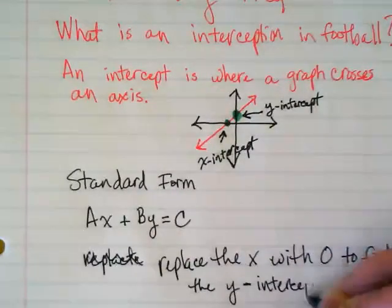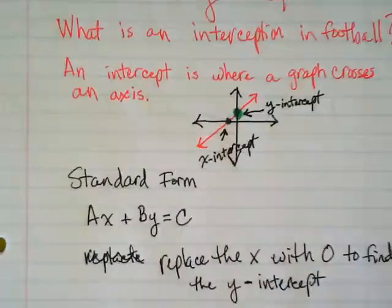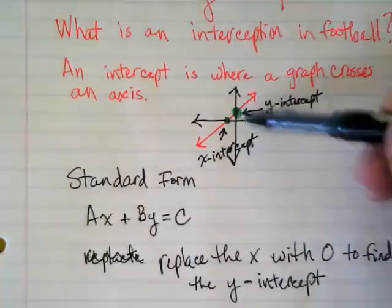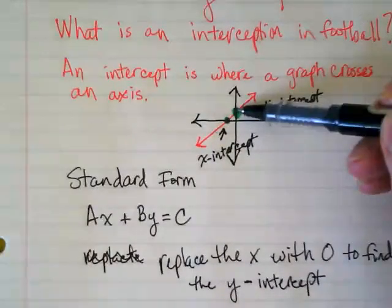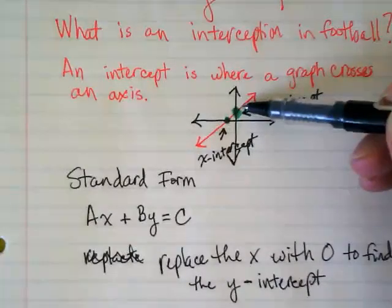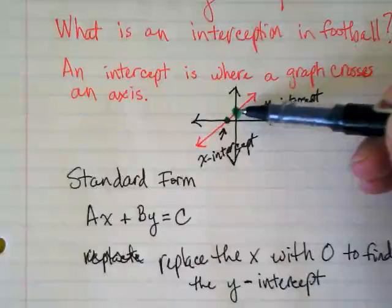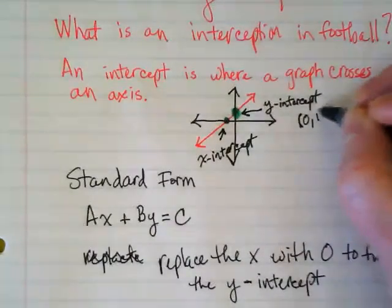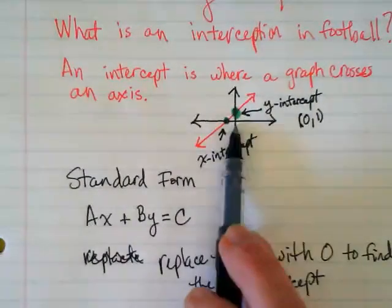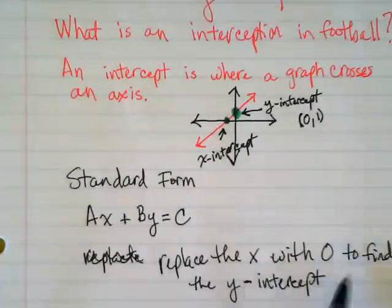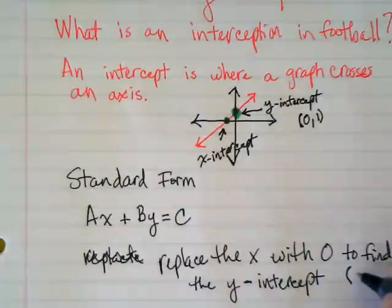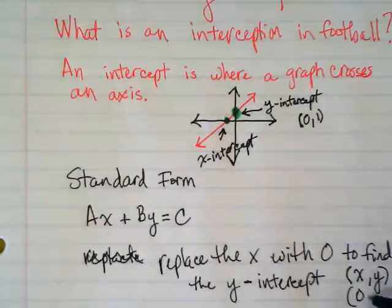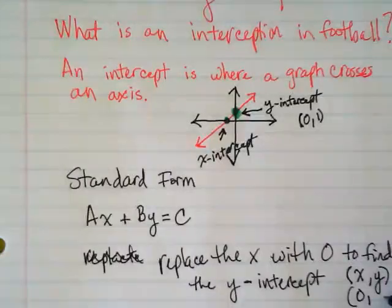We will do this in a few minutes so that you guys see why this works. But if you think about why it works, whatever this point is here, that means that this coordinate pair, the x was 0, and the y was positive 1. So if I replace in the equation the x with 0, the y number is where it's going to cross the line.